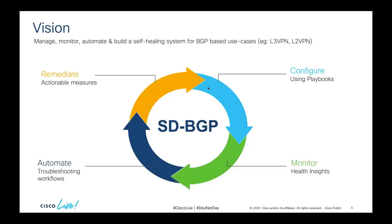Our vision for SD BGP app is to do closed-loop automation using the Crosswalk platform, where the service provider will be able to manage, monitor, automate, and build a self-healing system for BGP-based use cases. This app can be used to automate configuration of BGP for services such as L3 VPN and L2 VPN using playbooks. It can also be used to monitor BGP health on each device in the network using BGP Health Insights, and automate troubleshooting at a protocol level using machine reasoning. Once the root cause for an issue has been identified, this app can also take steps to remediate the issue by running a change automation playbook.